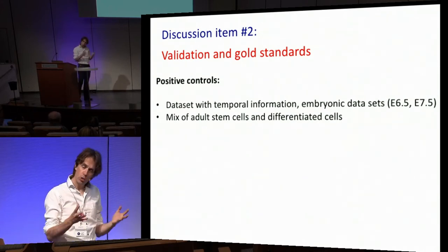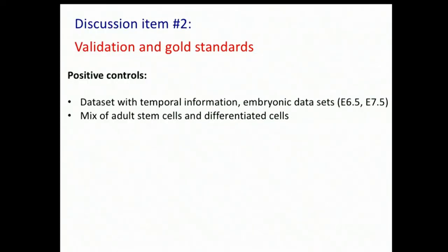Stem cells: if you know the stem cell, then you know that differentiated cells will come from that point A. You can label the stem cell as point A and the differentiated cells as B. You know how they should be connected. The topology of the interactions — the highways — are known. Can you actually validate this with your algorithms?